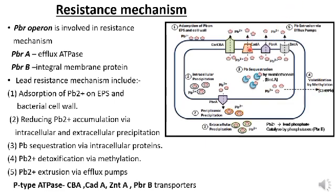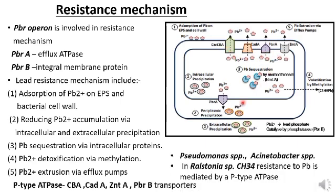Lead efflux is mediated by p-type ATPases such as CadA, GntA, PBR-A, and CBA transporters. Pseudomonas species and Acinetobacter species involve the lead resistance mechanism. In Ralstonia species, CH34 strain resistance to lead is mediated by p-type ATPase.